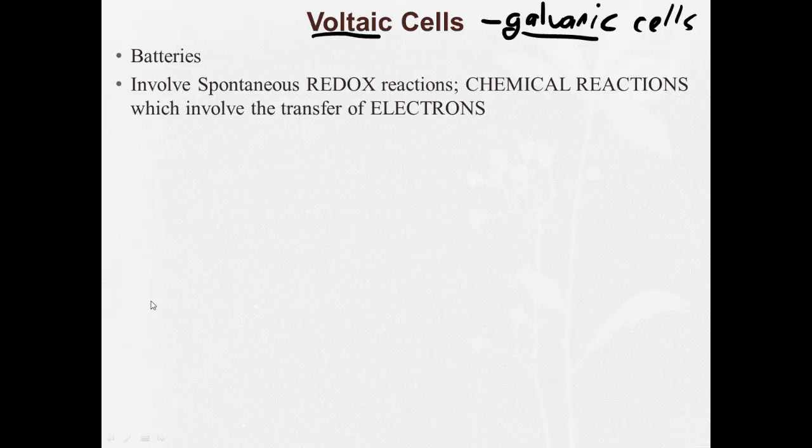These are chemical reactions that involve the transfer of electrons. Voltaic cells, batteries, involve spontaneous redox reactions. So the battery in your phone, the battery in pretty much any device you have at home that uses batteries, are redox reactions involving the transfer of electrons, and they are spontaneous.